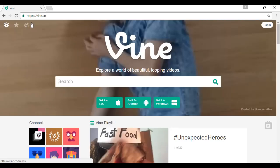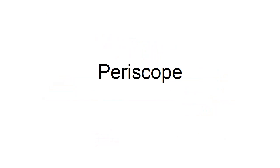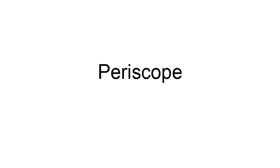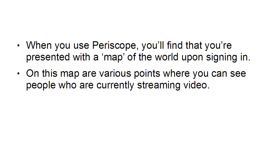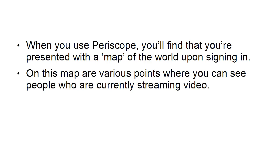You can see some Vine videos and download the app at vine.co. Finally, there's Periscope. Periscope is similar to Vine insofar as it streams short videos, but the key difference is that Periscope streams videos live. When you use Periscope, you're presented with a map of the world upon signing in, and on this map are various points where you can see people who are currently streaming video. Simply click on the dot on the map and the name of the broadcaster, and then you can tune in and start watching what they're filming. It's a bit like having your own TV station.